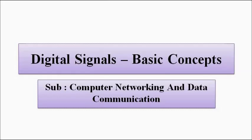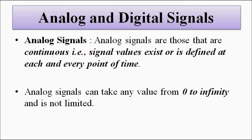Signals are of two types basically. In relation to computer networking and data communication, we will mostly find signals of two types: analog — the original form — and digital — the converted form, the modified form.